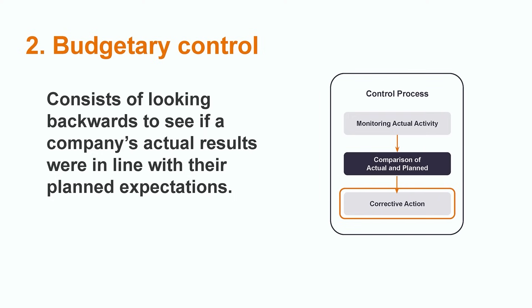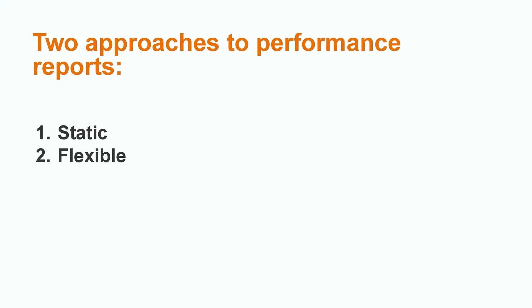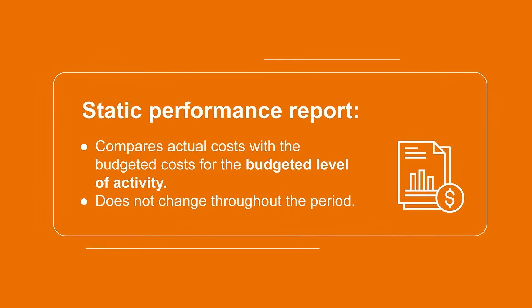Comparing actual results to the budget can help an organization pinpoint things that went well and take corrective action towards improving things in the future. For example, if they find that they spent significantly more than expected on raw materials one month, they may want to look into using different materials or purchasing from a more affordable supplier going forward. The first approach is a static budget performance report, which compares actual costs with the budgeted costs for the budgeted level of activity. Static budgets are created in advance based on an expected level of activity and do not change throughout the year — that's why they're called static. Companies usually create what's called a master budget, which takes into account their expectation for sales and spending for the upcoming year, and would continue to compare their actual results to this original master budget each period. While this can be effective in certain circumstances, if there are major changes in sales volume, production volume, or the economy, it may no longer be useful to use that original master budget to monitor performance.